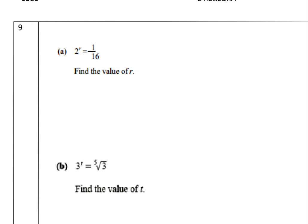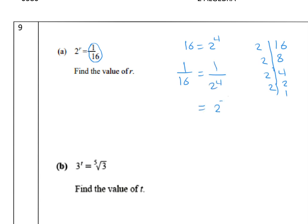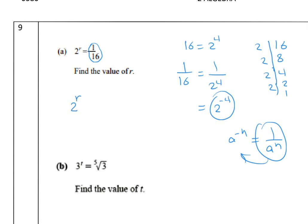Problem 9: solve 2^r = 1/16. Write 1/16 as a power of 2. 16 = 2^4, so 1/16 = 1/2^4 = 2^(−4), using the negative exponent rule. We know a^(−n) = 1/a^n, so 1/2^4 = 2^(−4). Rewrite the equation as 2^r = 2^(−4). Since the bases are equal, r = −4.